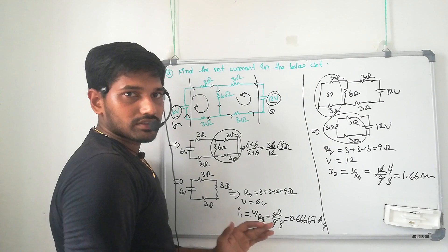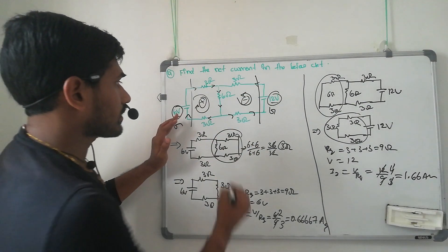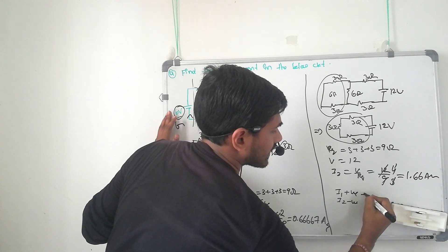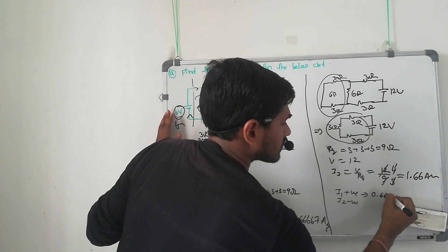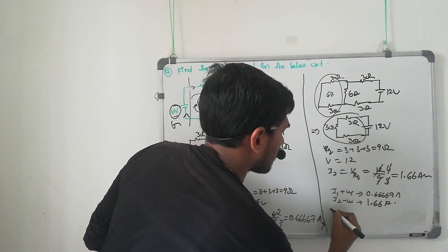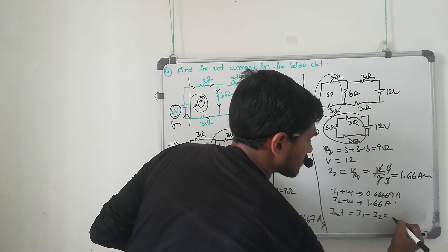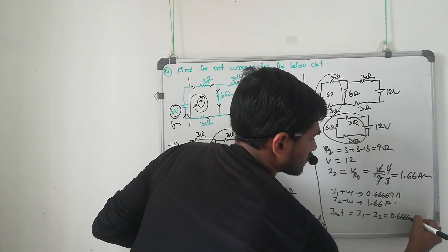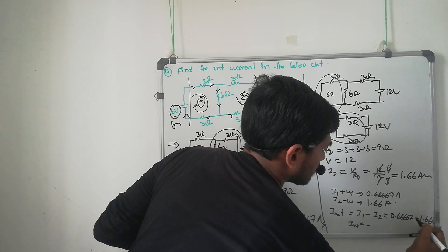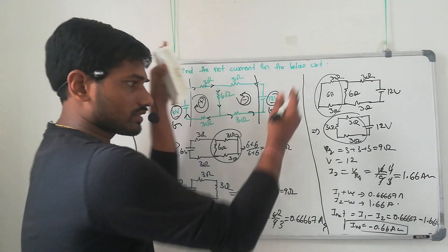What we are asked is to find the net current in the circuit. One is clockwise direction, another is anticlockwise direction. Clockwise is considered positive, anticlockwise is considered negative. So I1 is positive and I2 is negative. I1 equals 0.6667 amperes and I2 equals 1.66 amperes. I net equals I1 minus I2 equals 0.667 minus 1.66, so I net equals approximately 0.66 amperes in magnitude.